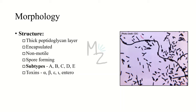Structure. This bacterium has a thick peptidoglycan layer in its cell wall, which is why it is gram-positive — this thick layer retains the dye on gram staining. This bacterium is encapsulated, meaning it has a capsule that protects it. It is non-motile because it has no motility apparatus like a flagella or cilia. This bacterium is spore-forming. It has subtypes A, B, C, D, and E, but types A and C are the most important, which I'll discuss in the pathogenesis section.